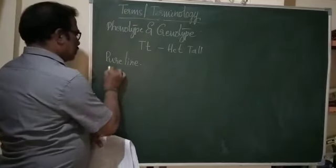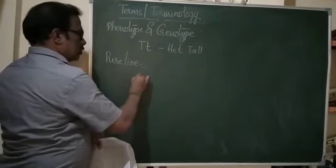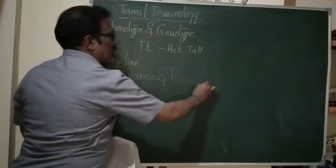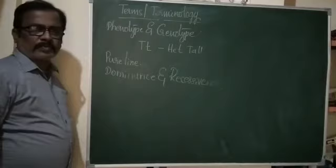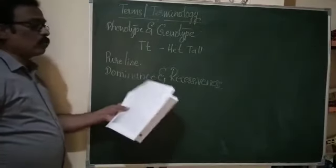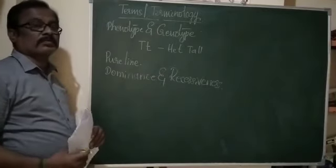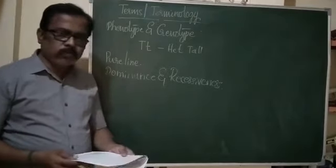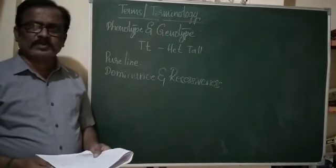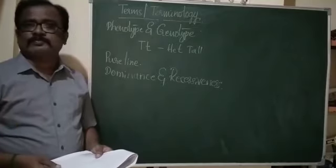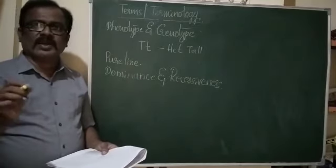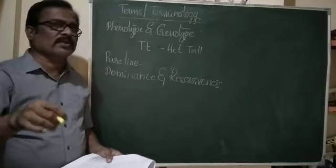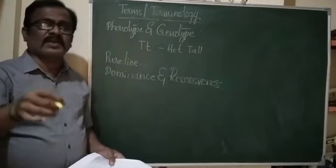Then dominance and recessiveness — another important term. Dominance means it is a condition in an allelic pair of characters in which one expresses itself to the exclusion of the other. One expresses itself to the exclusion of the other is called dominant.